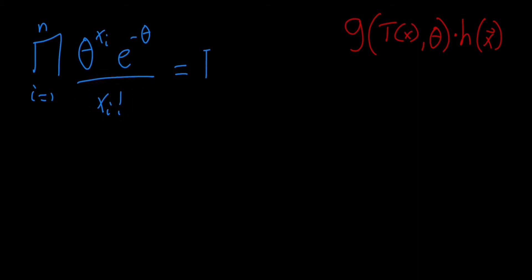I can write this as the product from i equals 1 to n of 1 over xi factorial times, then now let's think about what happens to this part here.